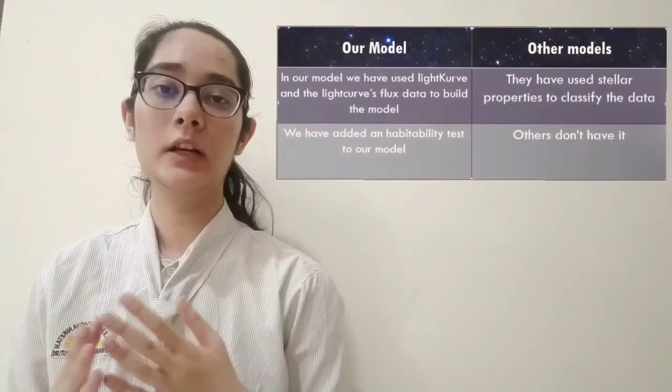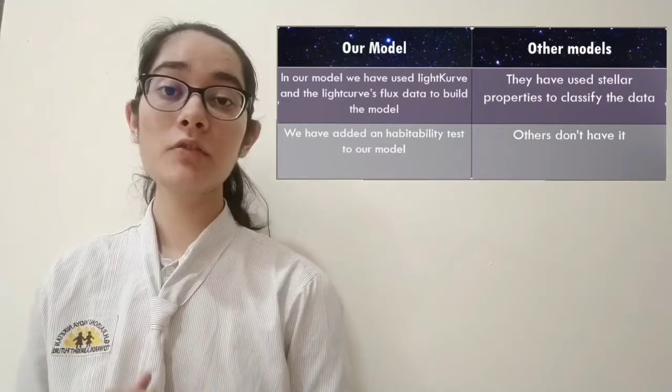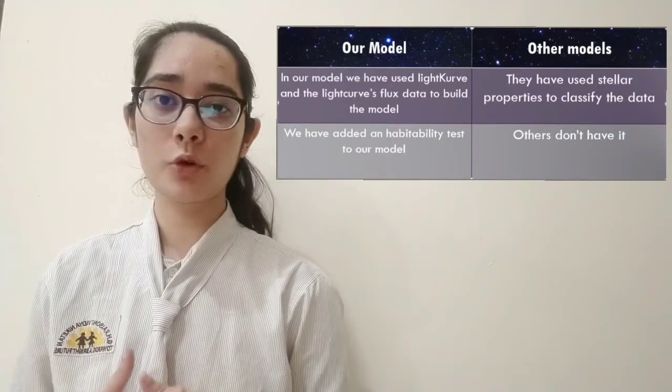Comparing our model with other models: we used Lightcurve and its flux data to build our model, whereas other models use stellar properties. We have included a habitability test while other models do not. In conclusion, we saw how scientists use transit light curves to find potential exoplanets. We used a machine learning model to classify the converted flux data into exoplanets and non-exoplanets, and we also ran a habitability test to find a potential habitable planet.